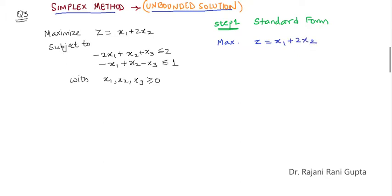Note that here we have only x1, x2. There is no coefficient of x3 in the objective function. And that is possible. So let's start with the first equation. For the second constraint, minus 2x1 plus x2 plus x3, we want to make it equal to 2. So we will add a slack variable s1.